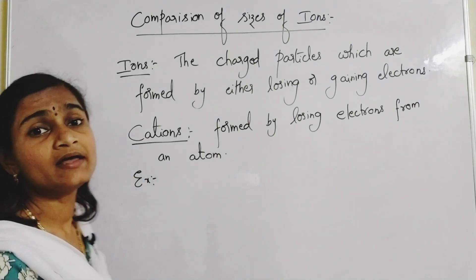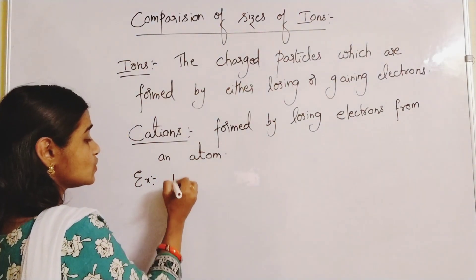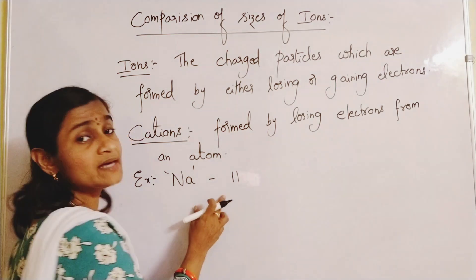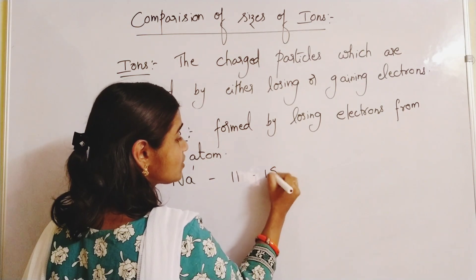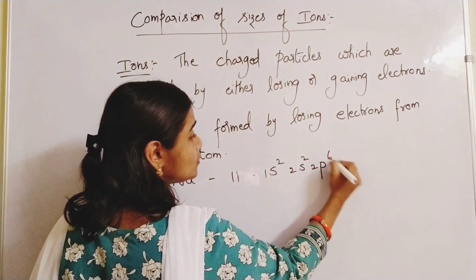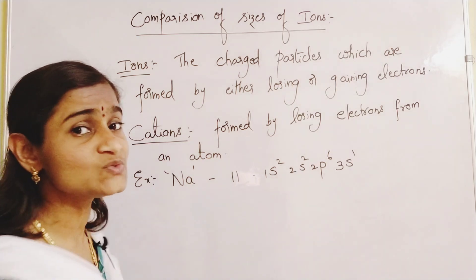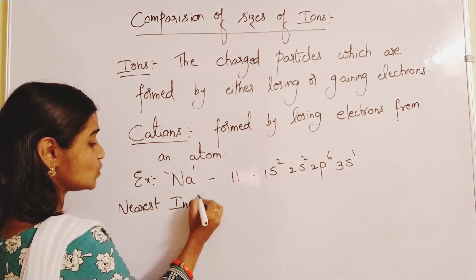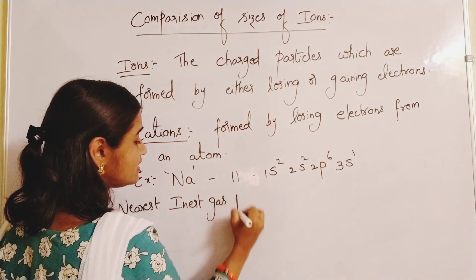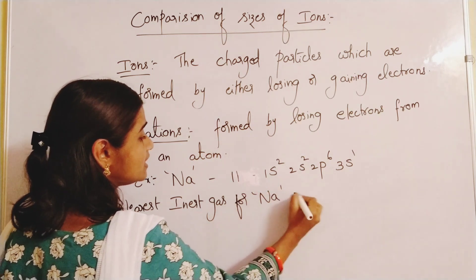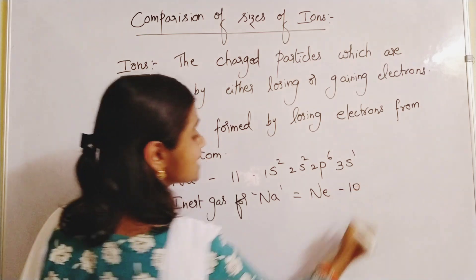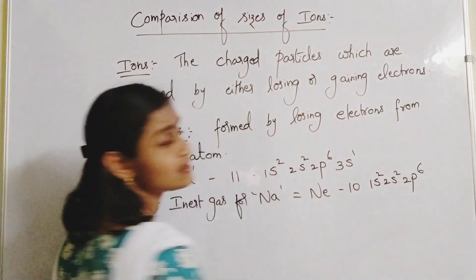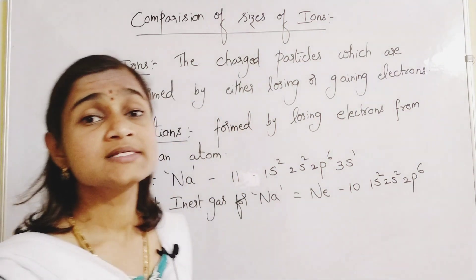Let us take the example of sodium, Na. Its atomic number is 11 — it is a metal. Its electronic configuration is 1s², 2s², 2p⁶, 3s¹. Its nearest inert gas is neon, which has atomic number 10 with configuration 1s², 2s², 2p⁶. So sodium wants to become stable like neon.